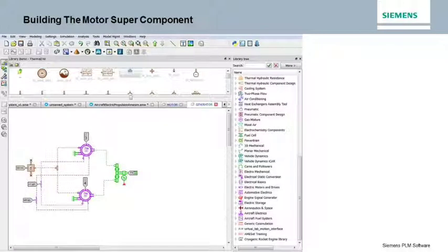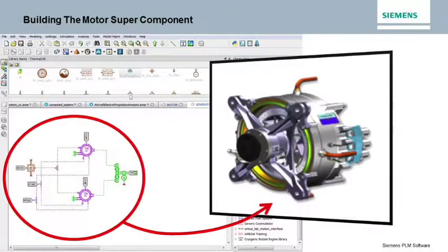Once all of the connections are completed and the subsystem is fully defined, the user then defines its inputs and outputs and saves it as a super component and provides an icon to represent the subsystem for future systems models.